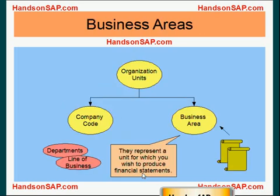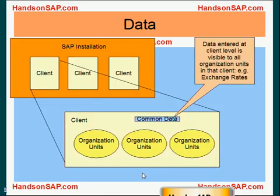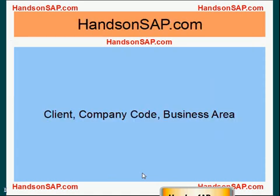In this tutorial, the point was to explain the differences between company code, the client, and business areas. Keep these concepts in mind — they'll come in handy in upcoming tutorials when we start doing the actual implementation of our company in the system. That's pretty much it for this tutorial. I'll see you in my next tutorial. Thank you.